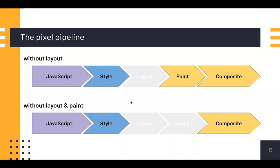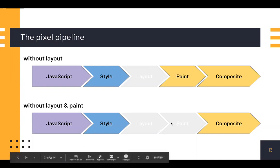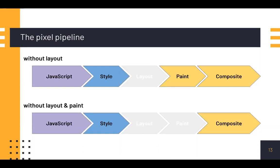It's not always necessary to touch every part of the pipeline on every frame. When you change only a paint property — like background image, text colors, or shadows — which doesn't affect layout, the browser skips layout but still does paint. If you change a property that doesn't affect layout or paint, the browser just does compositing. This third scenario is the cheapest and most desirable for app lifecycles like animations or scrolling.